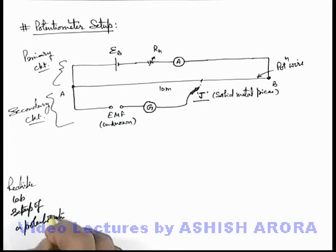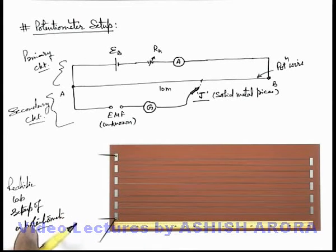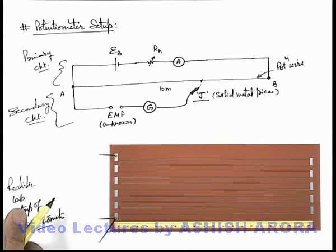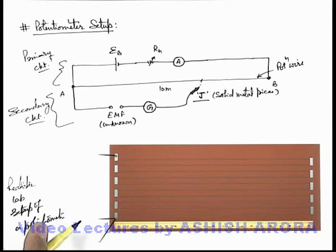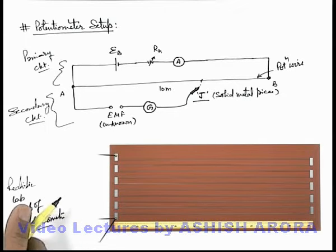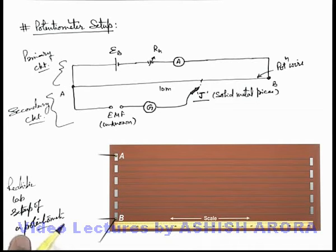Here you can see the picture. This picture gives you an idea about the actual lab setup of a potentiometer. Here you can see a 10 meter wire is placed on a wooden board, and there are 10 wires placed adjoining to each other and the terminals are connected alternately to each other, so that between terminals A and B you can see in this situation the total wire length is 10 meter. And scale is also connected adjoining to these parallel wires to measure the length from any terminal to any point of the wire.